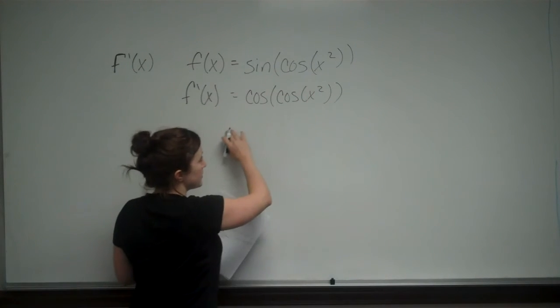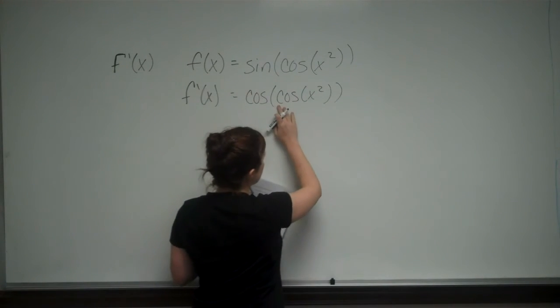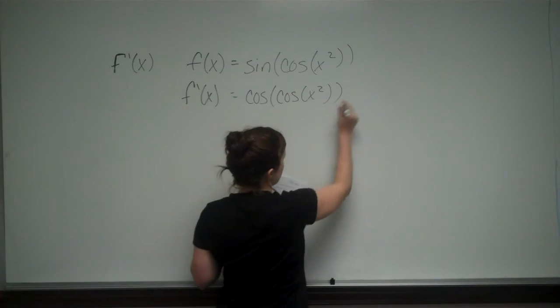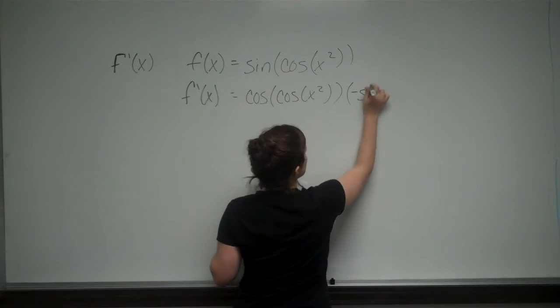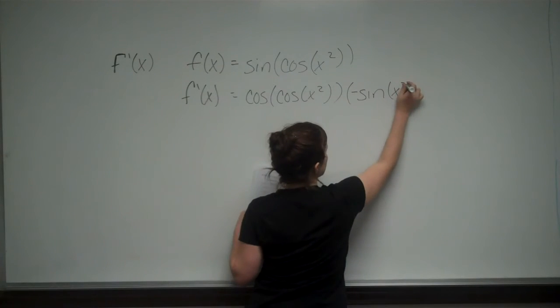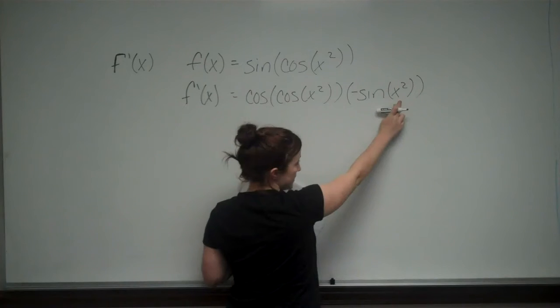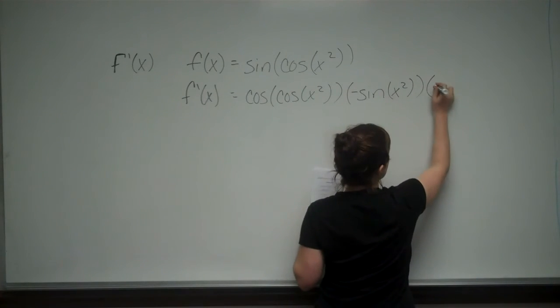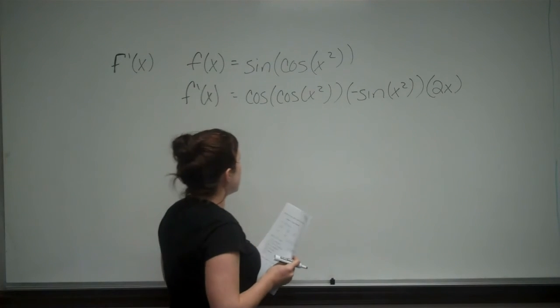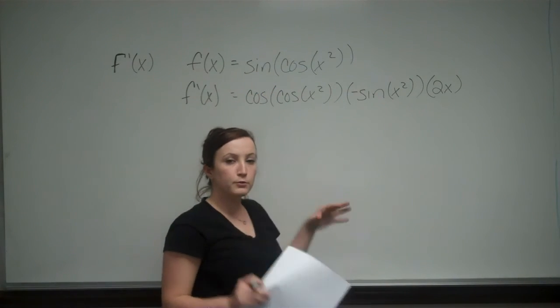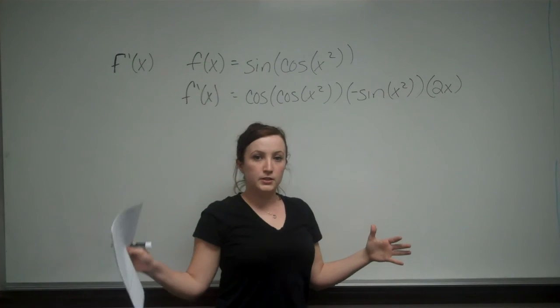Now we take the derivative of the inside. The derivative of cosine of x squared is negative sine of x squared. Then we take the derivative of the inside of this, which gives us 2x. This is an exercise in the chain rule, working from the outside terms.